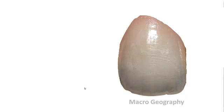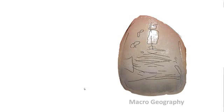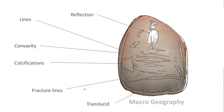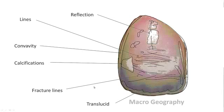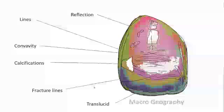We can also provide macro geography information for your lab technician, such as reflection lines, concavities, calcification, fractal lines, and translucencies. This depends on what case you're dealing with in your office.